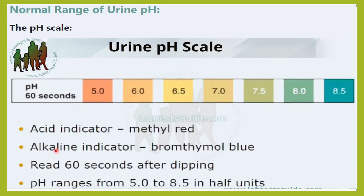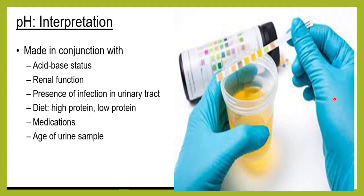If the urine is acidic, it will give a methyl red color; if alkaline, it will give a bromothymol blue color. Always remember, you have to read this within 60 seconds of dipping the reagent. The normal range is 4.5 to 8. The pH interpretation must be made in conjunction with the patient's acid-base status, renal function, urinary tract infection status, diet, and any medicines or tablets the patient is on.